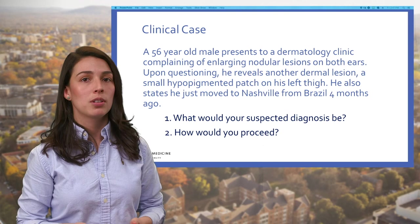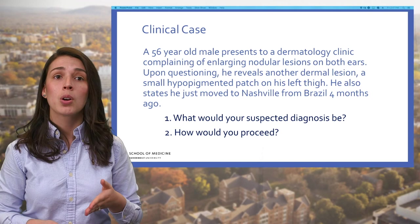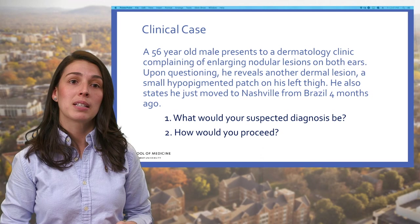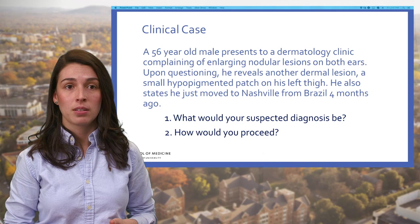It's time for a clinical case. A 56-year-old male presents to a dermatology clinic complaining of enlarging nodular lesions on both ears. Upon questioning, he reveals another dermal lesion — a small hypopigmented patch on his left thigh. He also states that he just moved to Nashville from Brazil four months ago. You have two questions: what will be your suspected diagnosis, and how would you proceed?